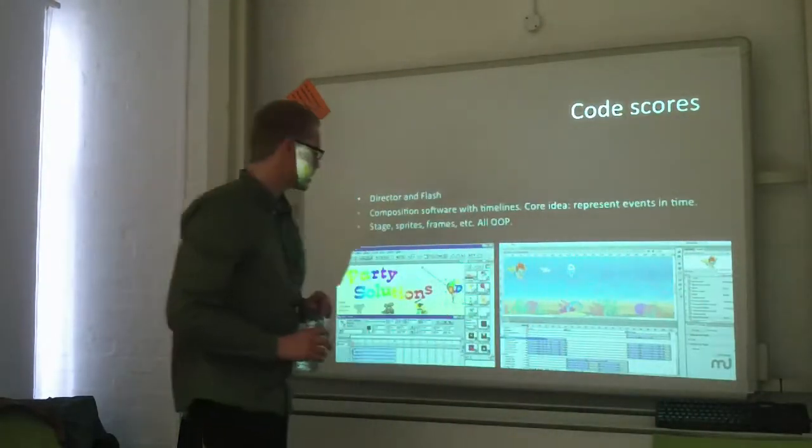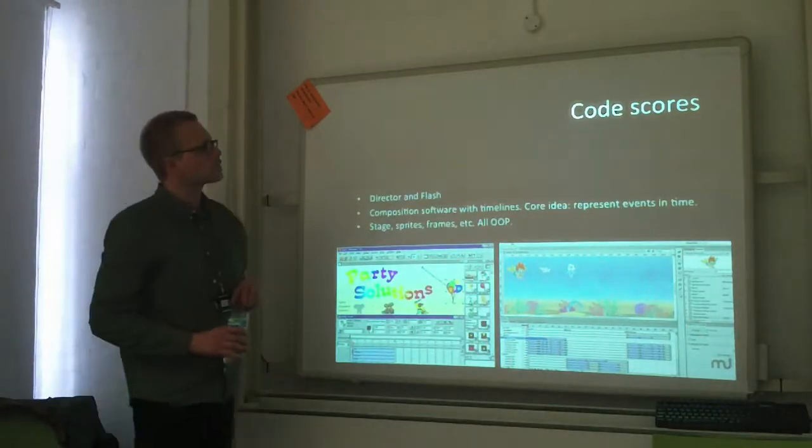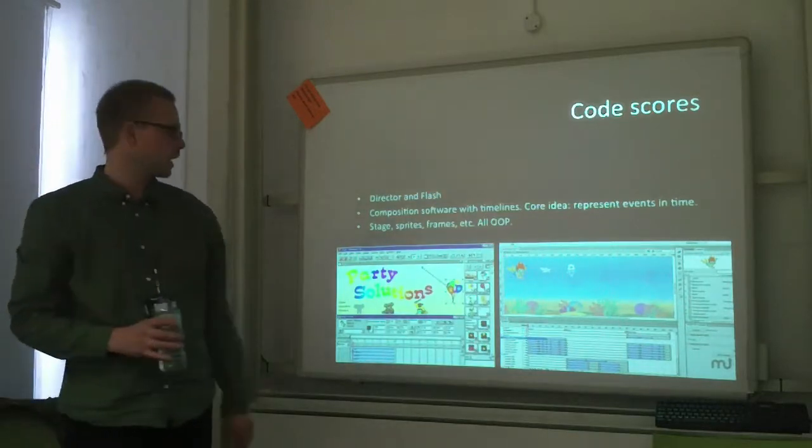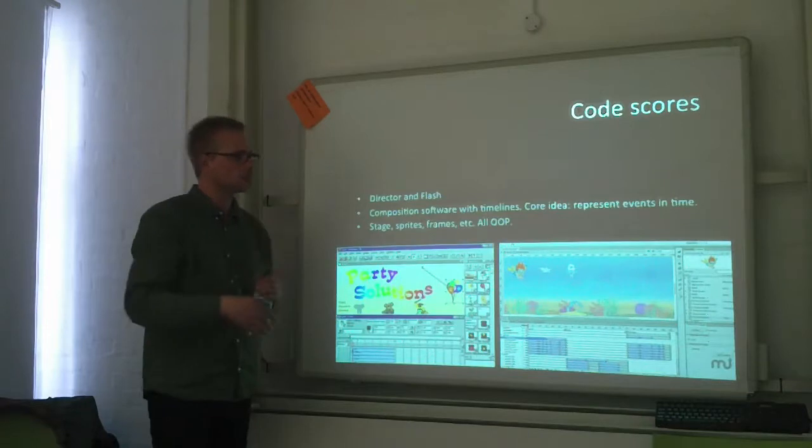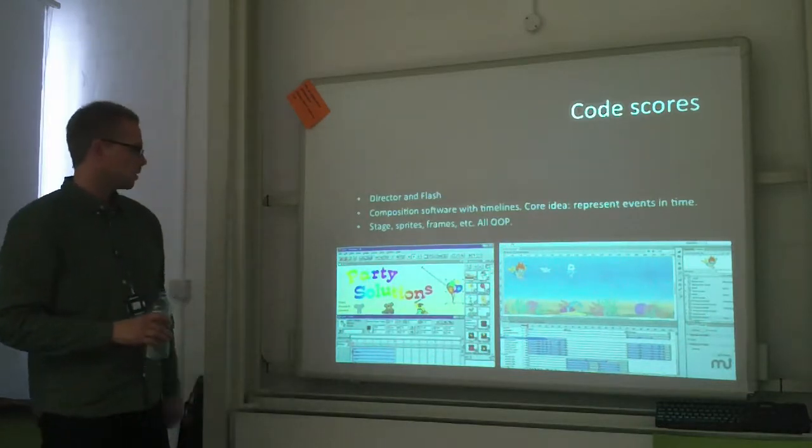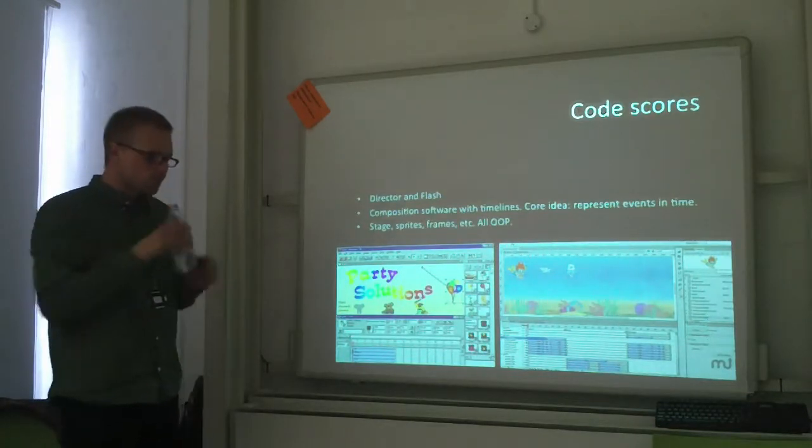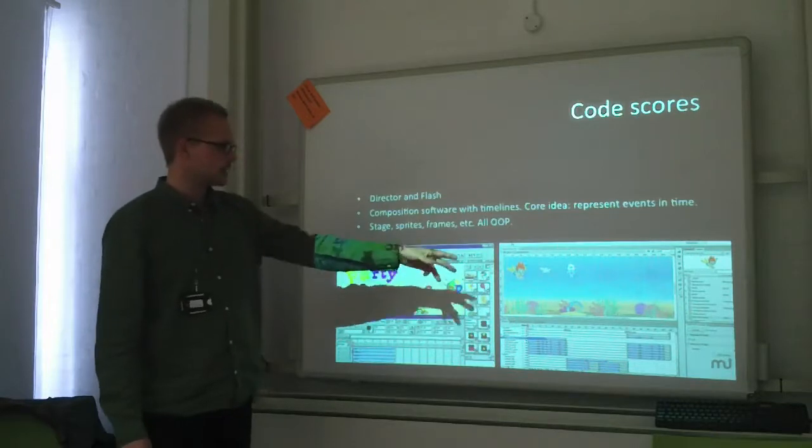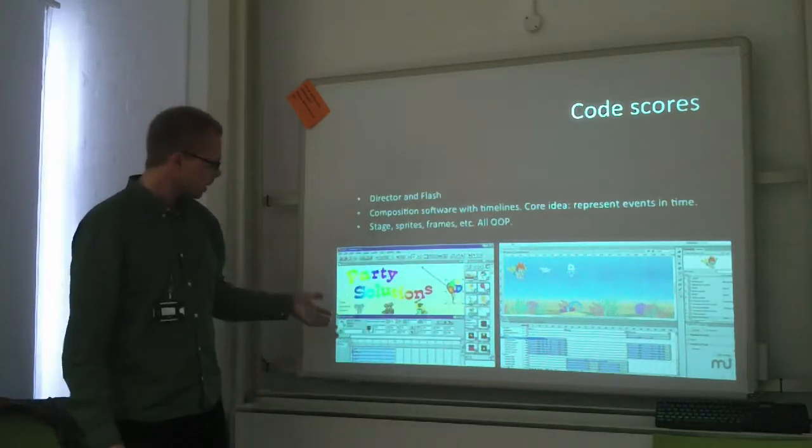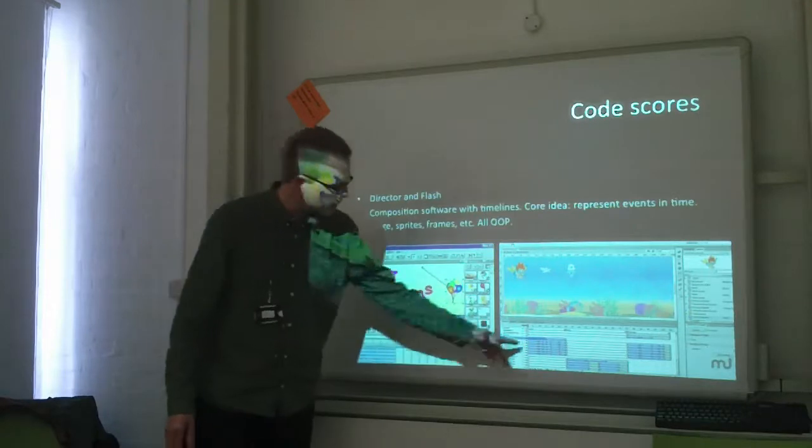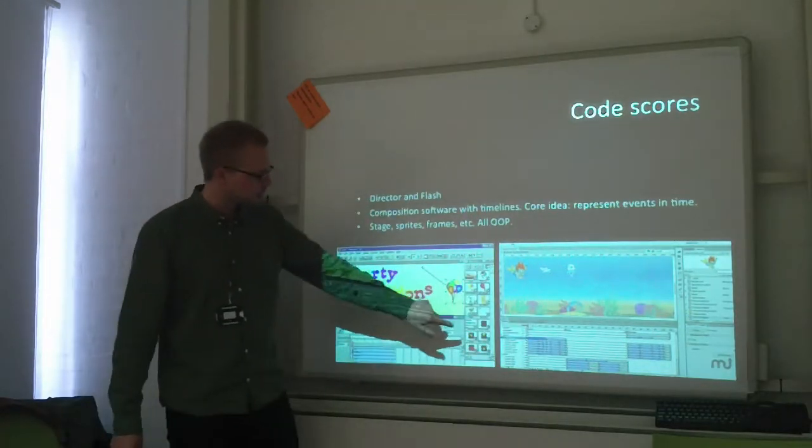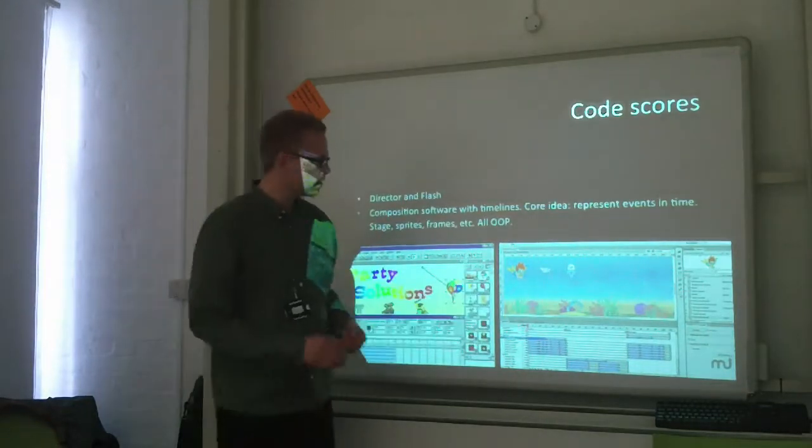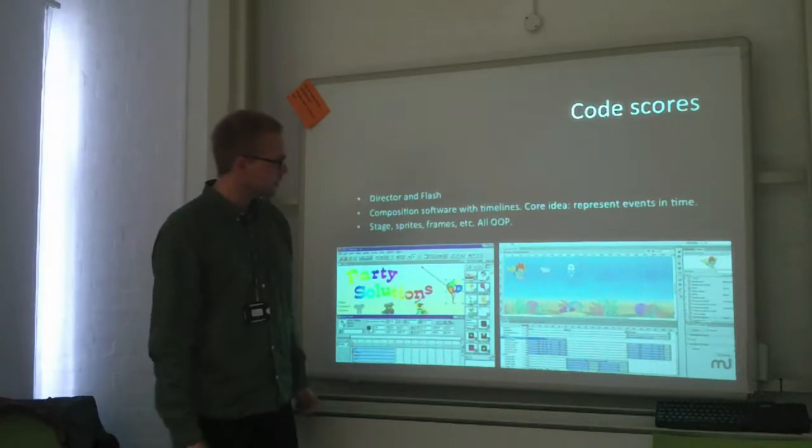So if we look at code scores, what is that? I guess many of you have programmed, and typically we work with some kind of a loop or recursion. There were two environments in the late 80s and 90s that came up where code started to be represented as events in time. You could play scripts on a timeline and this is very much originating from object-oriented programming.